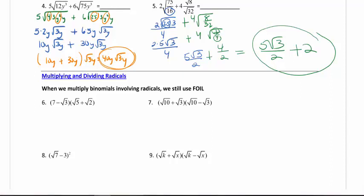Going to our multiplication steps, we're still going to use FOIL. We're still going to use the difference of squares. We're still going to use distribution. So all of the rules still apply. So on number 6 we are going to FOIL.